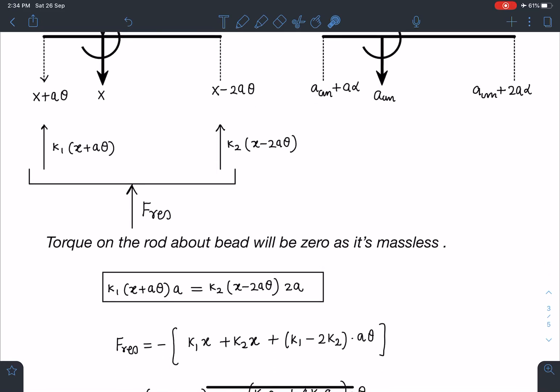All right, now I can write the expression of F_restoring. So restoring force, I'll be writing minus sign kinematically, I'm putting here. And then I'll be writing net force towards the mean position. So this is one force towards the mean position, plus this is another force towards the mean position. X terms I'm separating here: k₁x plus k₂x from here.